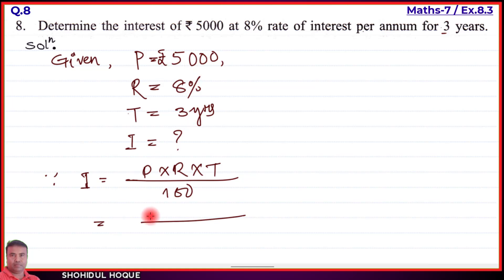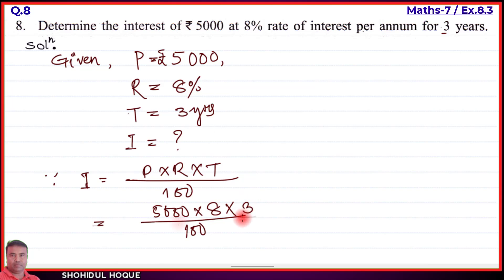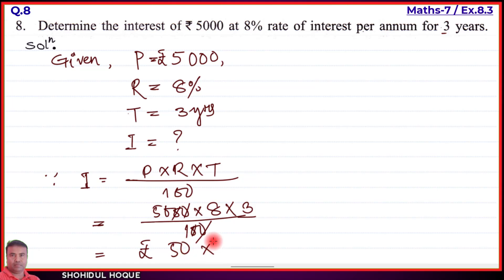Applying the formula: I = (5,000 × 8 × 3) / 100. Cancelling zeros — two zeros cancel with the 100. The remaining calculation gives us the interest value.